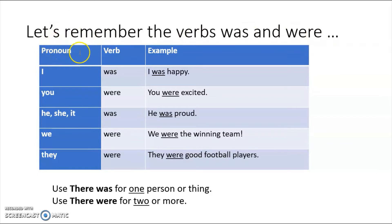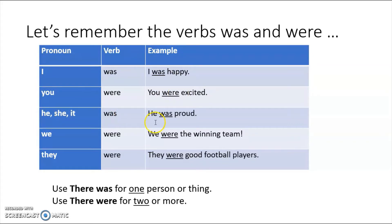A pronoun is a word that takes the place of a noun, and a noun is a person, place, or thing. A verb is an action or something you do or did. Example sentences: I was happy. You were excited. He, she, it was — for example, he was proud, she was proud.